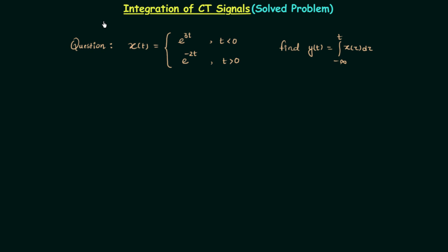In the previous lecture I explained how we can integrate continuous time signals. Now in this presentation we will solve one question based on the discussions of the last lecture. In this question, signal X(t) is defined and we need to find Y(t), which is the integration of signal X(t) from minus infinity to t. We will go on increasing t to infinity and see what is the integration of signal X(t).